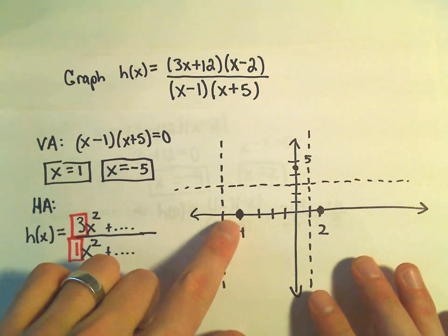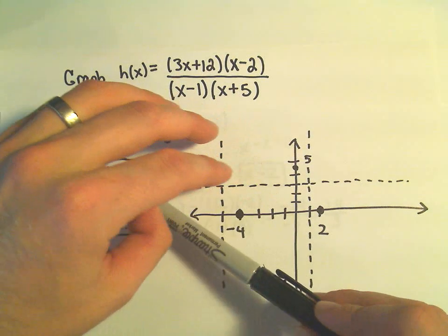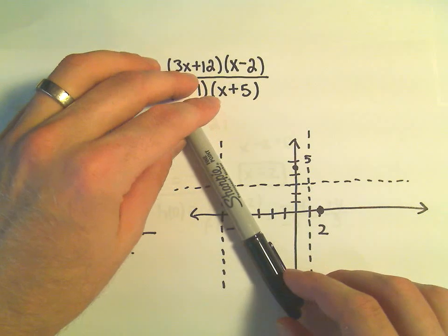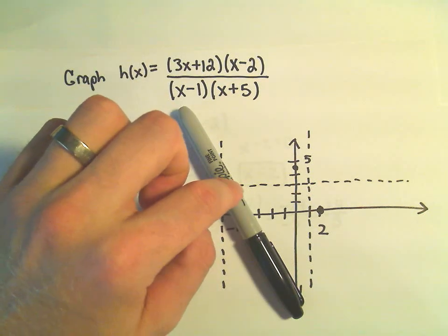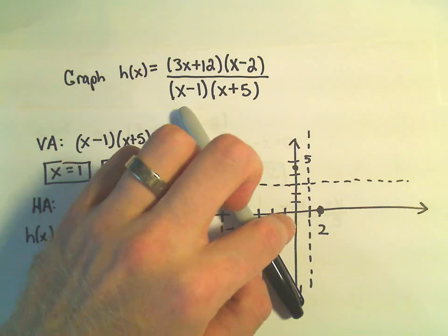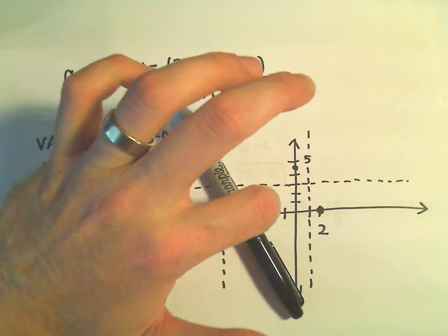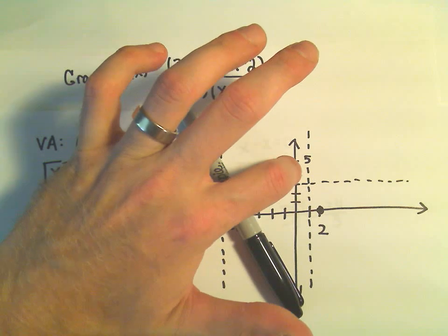So that means the graph at negative 4 just has to cross through it. Now, I know it can't be doing this. It can't be going down through there because if it did that, eventually it would have to come back up because this is a y-intercept. It would eventually have to come back up and go through that point.